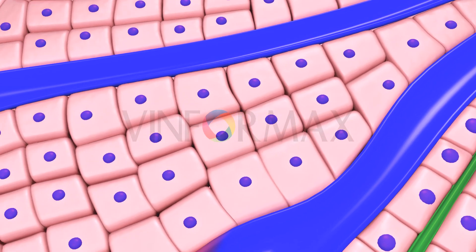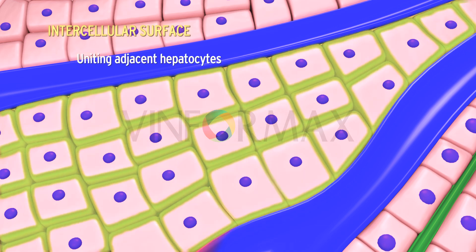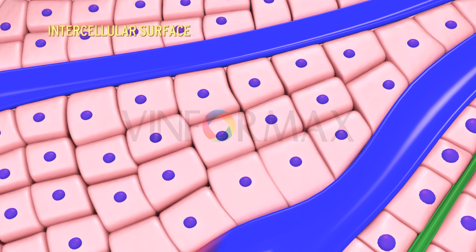The intercellular surface: these surfaces help in uniting adjacent hepatocytes. They consist of communicating junctions which help in exchange of substances between adjacent cells.